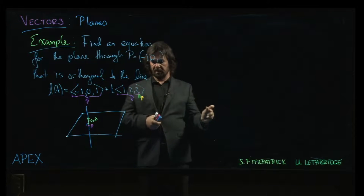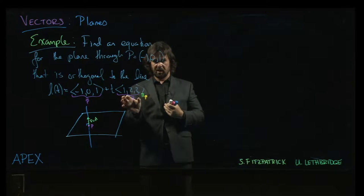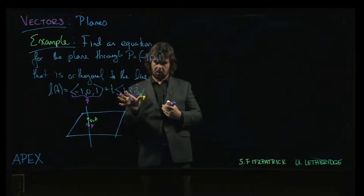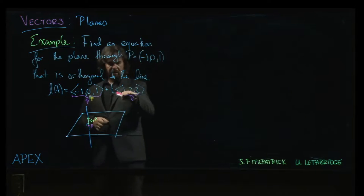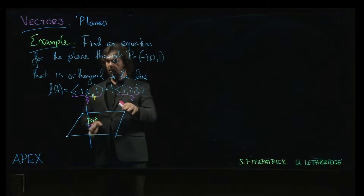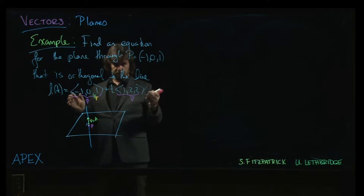Also given, we just had to think a little bit about why it was being given to us, or how it was being given to us. So the normal vector is just the direction vector for the line, because the line is orthogonal to the plane.